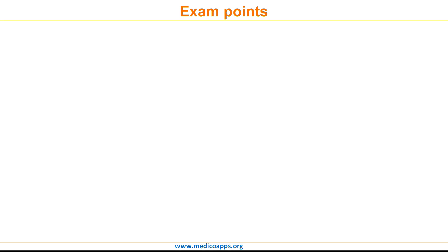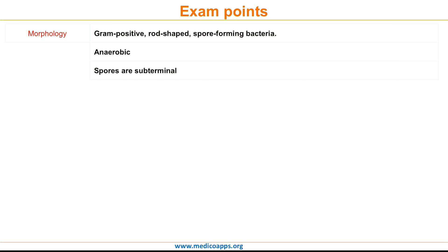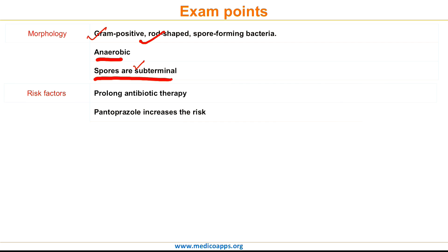Let's look at the most important points from this masterclass for PG entrance exams. Regarding morphology: Clostridium difficile is gram-positive, rod-shaped, anaerobic, and spore-forming, with subterminal spores. There was an exam question in NEET PG in which an image of a subterminal spore was shown and you were asked to name the organism. Key risk factors are prolonged antibiotic therapy, pantoprazole, and use of a rectal thermometer.